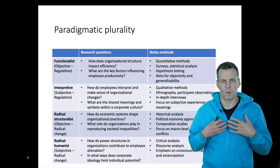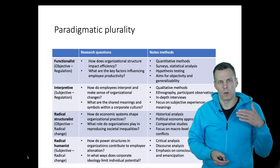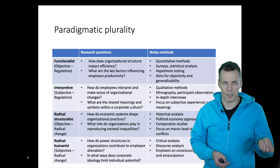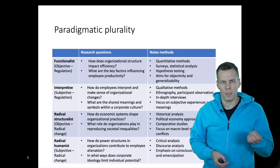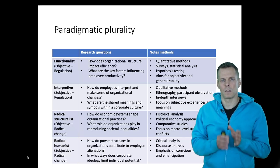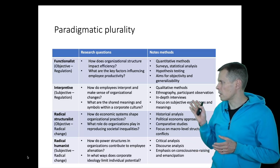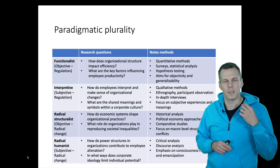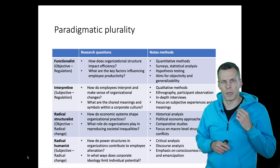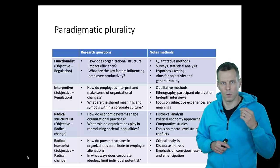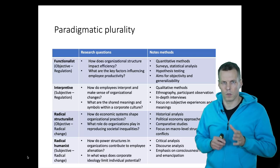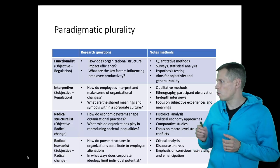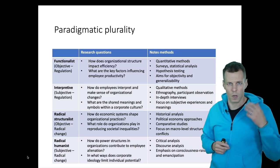In quantitative research we make what we call realist assumptions and we assume that those numbers represent reality. In qualitative research, in contrast, we can study reality but we can also study people's interpretations of reality. So we are not constrained to studying what is — we can also study how it is understood by people. We can study what happens externally to people or what happens internally in people's heads.